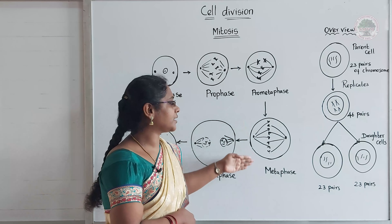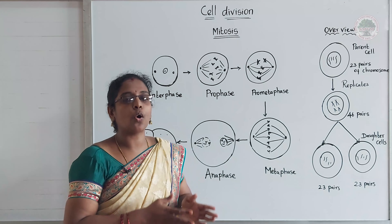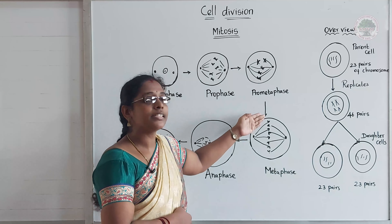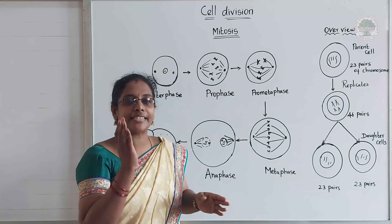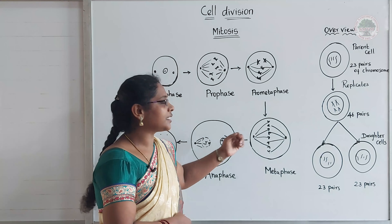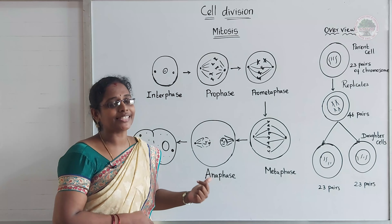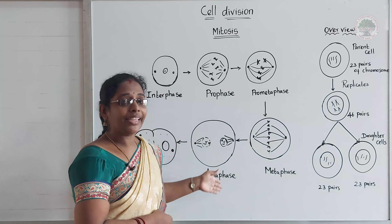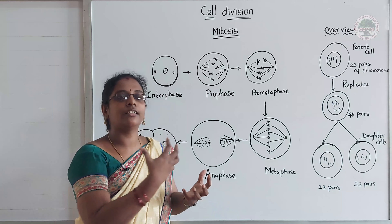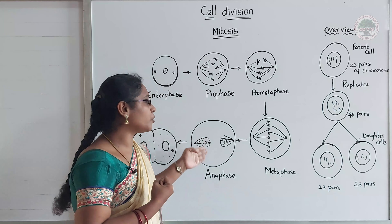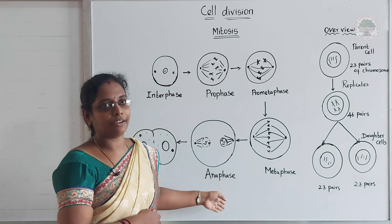The spindle rays directly attach to the kinetochores. Then the cell enters the next phase called metaphase. During metaphase, all the chromosomes meet at the center of the cell in an exact line. After metaphase, it enters anaphase. During anaphase, the centrosome, with the help of spindle rays, pulls the chromosomes to each side of the cell.